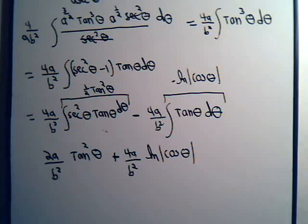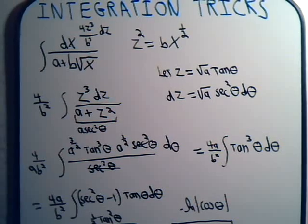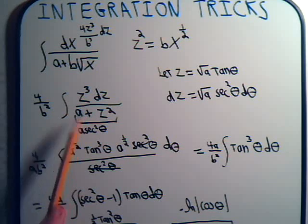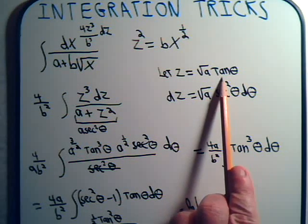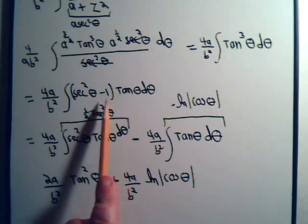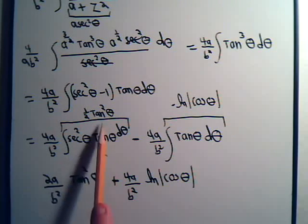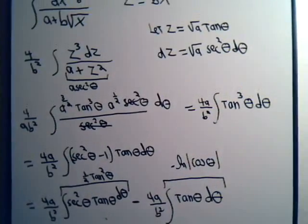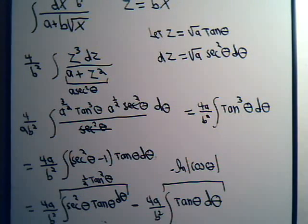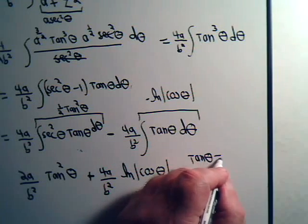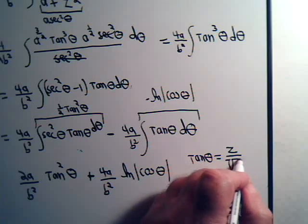Now we need to go back and trace our substitutions. We had the original integral, then made the first substitution, which led us to the z integral. We split it into two parts and solved them. Now we return to our substitution: tangent of theta equals z divided by the square root of a.